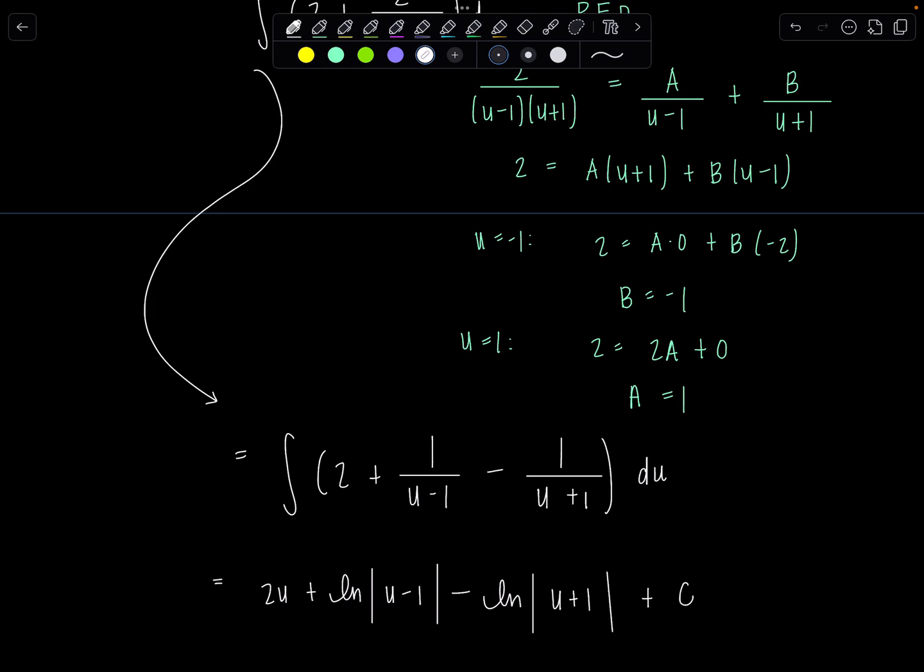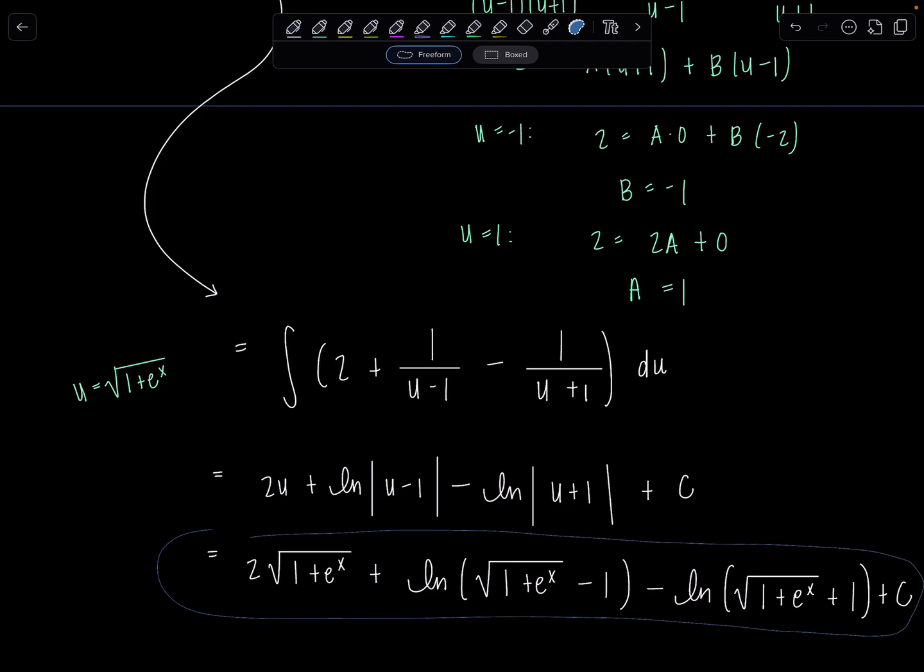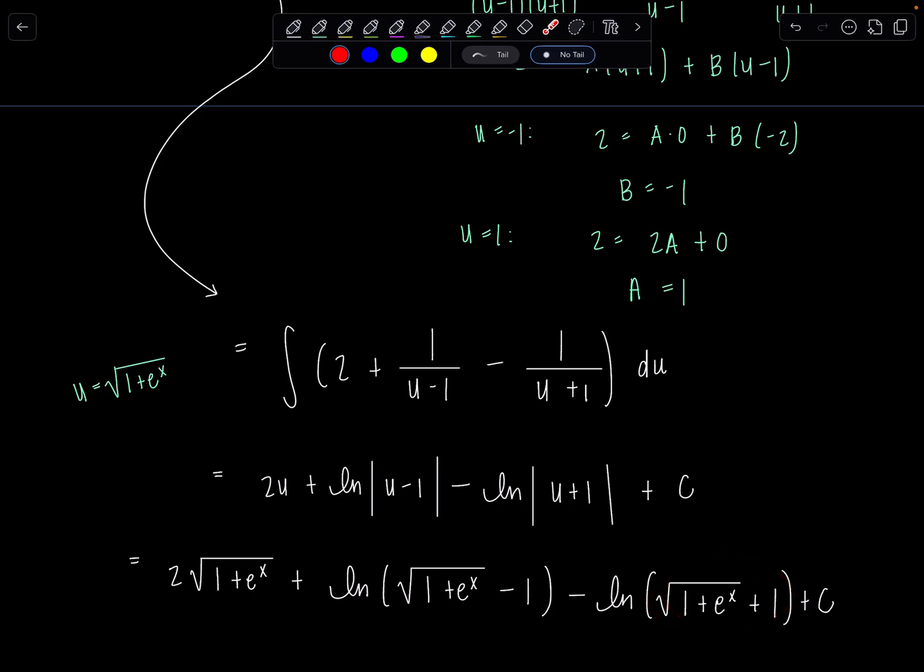And then sub back in, u was equal to, do you even remember, the square root of 1 plus e to the x. So this is going to be 2 square root 1 plus e to the x plus ln. Now, this is always going to be bigger than 1. So if I subtract 1, I don't have to worry that this argument on my natural log would be negative. I can just switch to parentheses now. And then we have square root 1 plus e to the x minus 1 minus ln square root 1 plus e to the x plus 1 plus C. I hate being so squished. Let's just scoot over. I switched to parentheses on this last guy. Since there's addition, I don't even need to fret. But all is well. Let's box this with pride. That was a job well done.